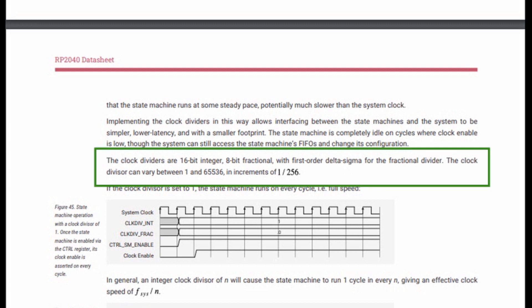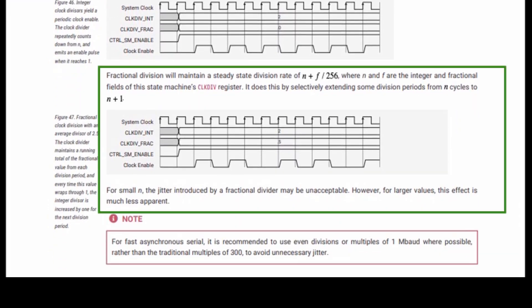The state machine clock is derived by dividing the system clock with integer and fractional divisors. This gives, on average, a wide range of state machine clock frequencies. However, frequency jitter is introduced with the fractional divisor.